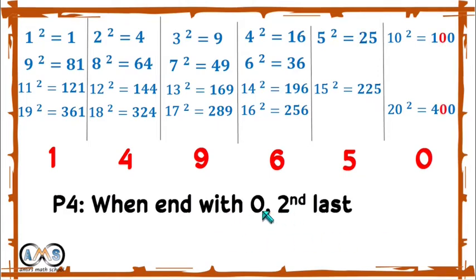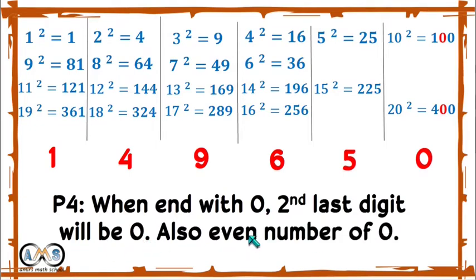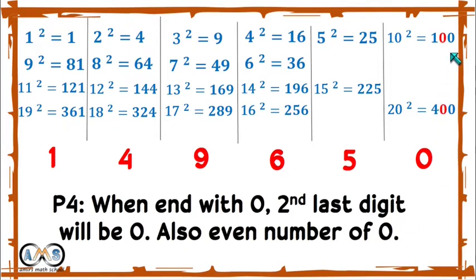When a perfect square number ends with 0, the second last digit will also be 0, and we always get an even number of zeros — that is, 2, 4, or 6 zeros. For example, 100 and 400 end with 0, and the second last digit is also 0.